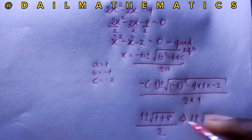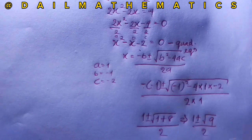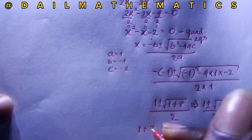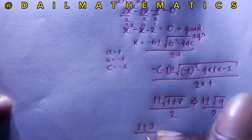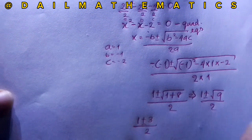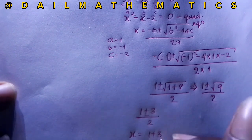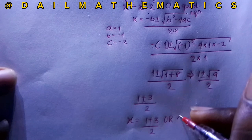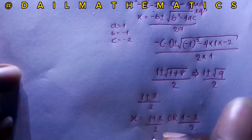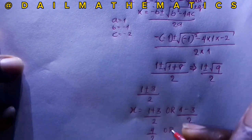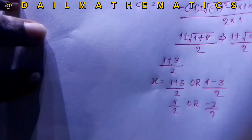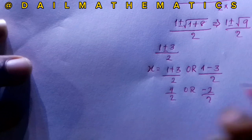1 plus 8 gives us 9, and square root of 9 is 3. So x equals 1 plus or minus 3, over 2. This gives x equals (1+3)/2 or x equals (1−3)/2, which is 4/2 or −2/2.